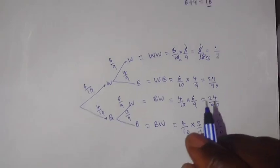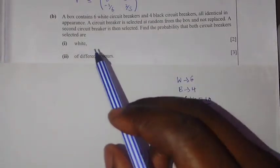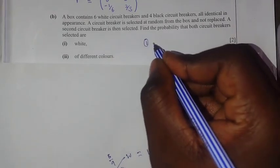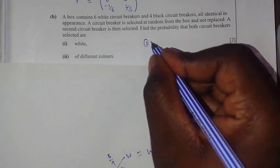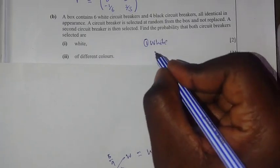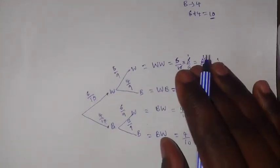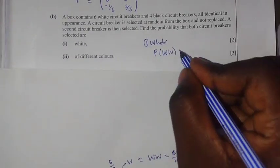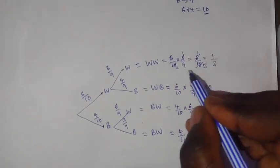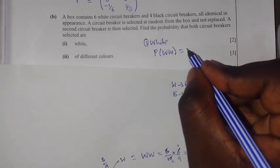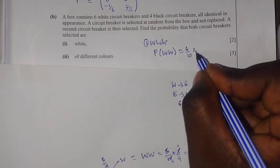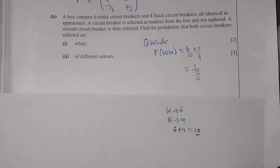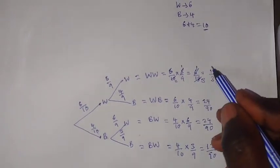Getting back to the question: find the probability that both circuit breakers selected are white. The probability of picking white-white equals 6 over 10 times 5 over 9, which gives us 1 over 3. So this is our answer for part B1.